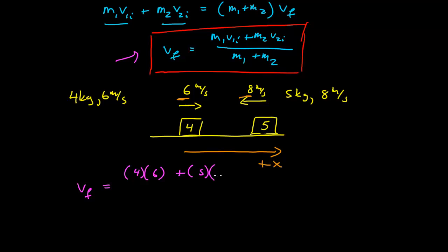plus the mass of the second times the velocity of the second, which is negative eight meters per second. That's in the negative x direction. And the sum of the masses is four plus five. So this is 24,